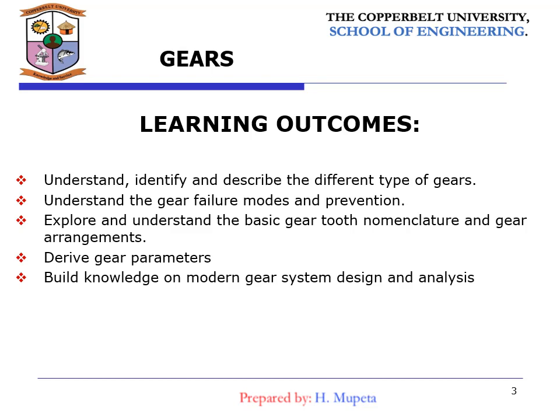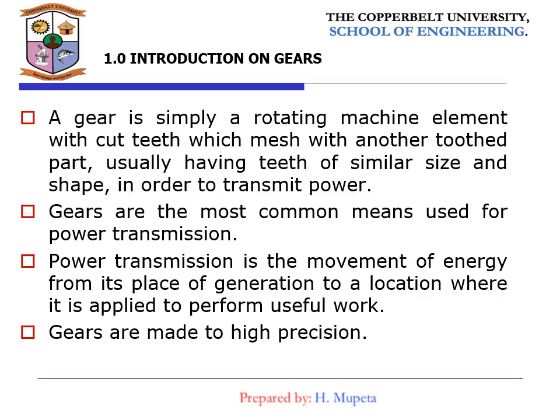In the introduction, gears are toothed wheels used to transmit power. Generally gears are used for power transmission; however, they can accomplish much more. Power transmission is the movement of energy from the place of generation to a location where it is applied to perform useful work. To do this, gears are made to high precision — you can't afford to make a mistake in power transmission.